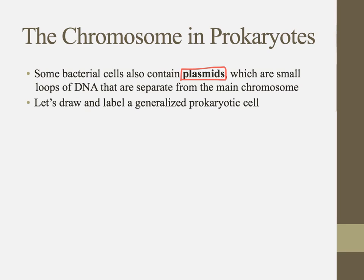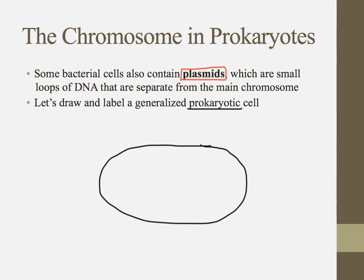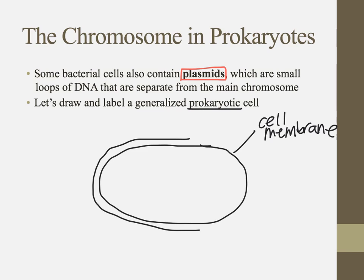They're kind of like an accessory DNA. So just to do a review of the prokaryotic structure, let's go ahead and draw one. I like to start with the cell membrane — you can call that the plasma membrane if you prefer. Just outside of that is the cell wall. All prokaryotes have a cell wall.